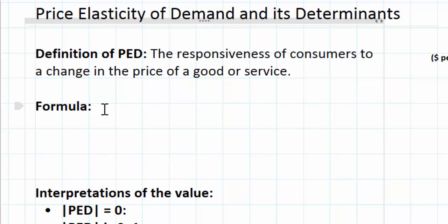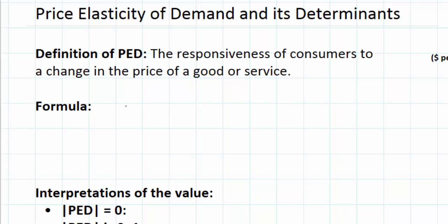The price elasticity of demand formula may look familiar to those who have studied linear demand and supply equations. It measures the percentage change in quantity of a good divided by the percentage change in the price of the good following a price change. The important distinction is that PED measures the percentage change in quantity demanded divided by the percentage change in price — not simply the change in quantity divided by the change in price, which is the B variable in a demand equation.